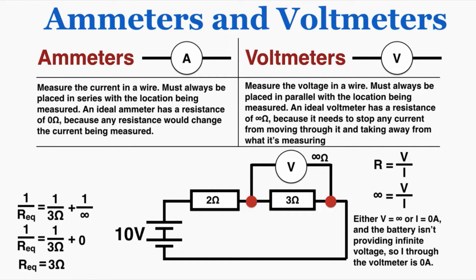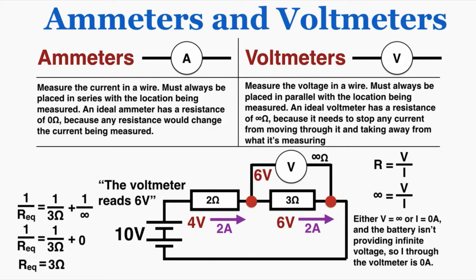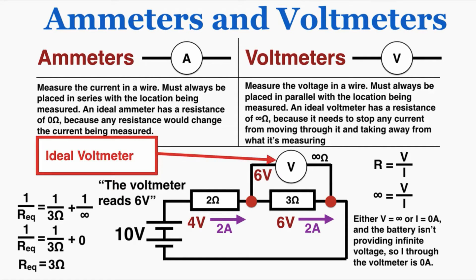Because the total resistance in the circuit is still 5 ohms and the voltage is 10, the current is still 2 amps, and since no current goes through the voltmeter, all that current goes through the 3 ohm resistor. The voltage drop is 6 volts using V equals IR. Because voltage is the same for all paths in parallel, the voltmeter also experiences a 6 volt drop, and that's how it reads the voltage. So the voltmeter reads 6 volts — this is an ideal voltmeter because it does not affect the voltage drop of the circuit.